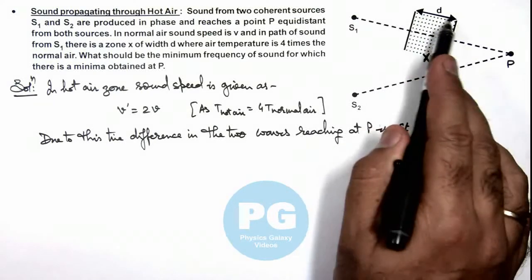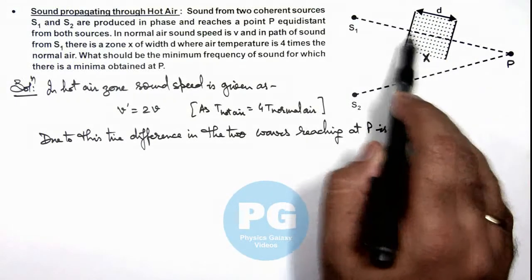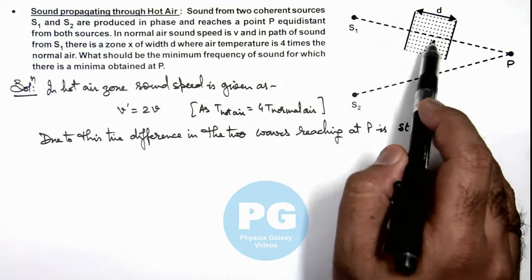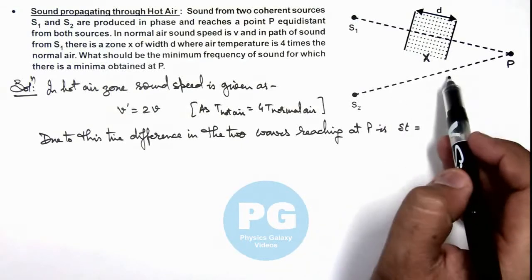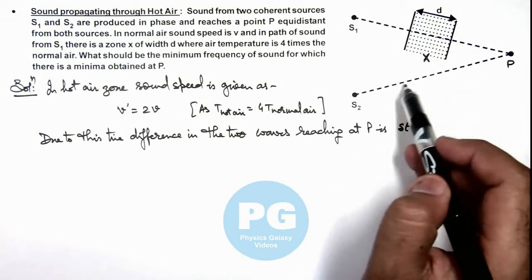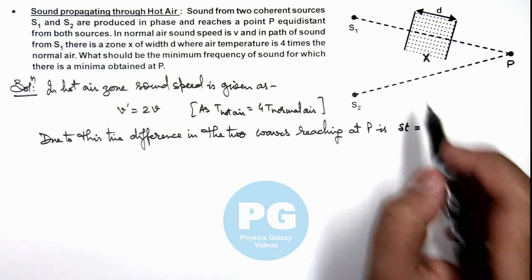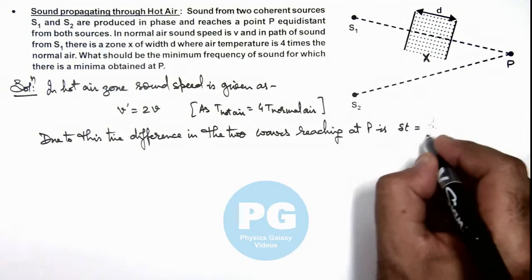This d in which the sound will travel at a speed 2v, and here if we consider a region over d, sound will travel at a speed v. So time difference will be d by 2v.